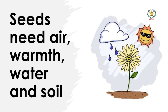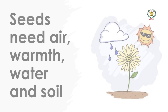Seeds will grow when they have the right conditions: air, warmth, soil, and water — these are the four factors. Seeds need good soil which is rich in nutrients. Air is needed by the seed to breathe. Warmth makes the seed active. And water is also essential for germination.